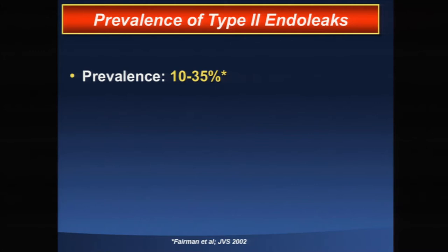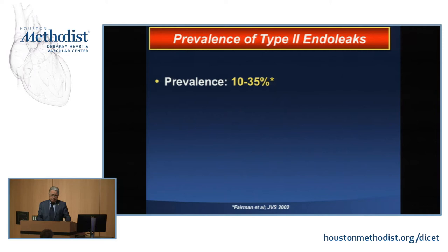Type 2 endoleak is not a rare occurrence. It has been highly popularized as no big deal — just a little nuisance. But having performed thousands of those procedures, with an incidence somewhere between 10 to 35 percent, we're talking about a large number of patients that need surveillance, because this might be a minor problem to you, but it could be a major problem to your relative or your family.